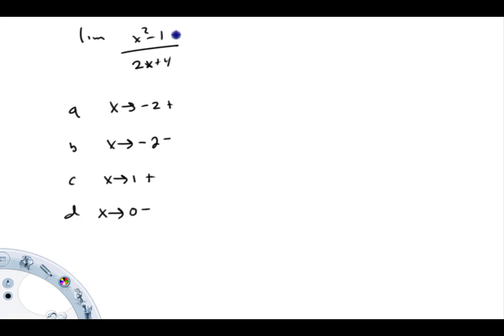So what we're going to do here is try to take the limit of this rational expression, x squared minus 1 over 2x plus 4, and we're actually going to take four different limits: limit as x approaches negative 2 from the right, and then negative 2 from the left, then as x approaches 1 from the right, and then 0 from the left.